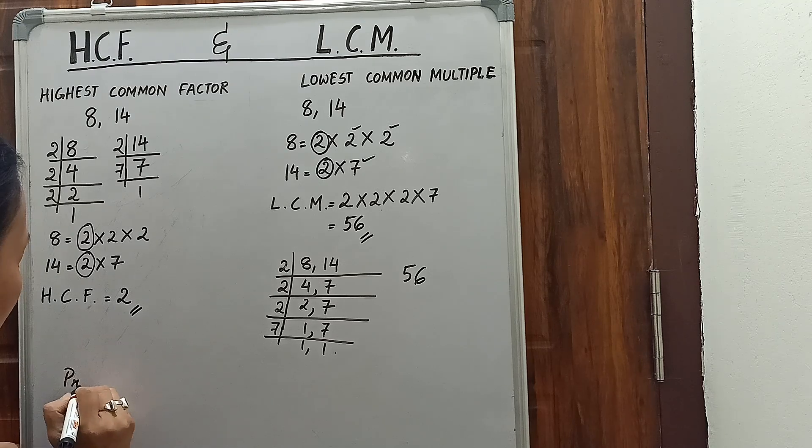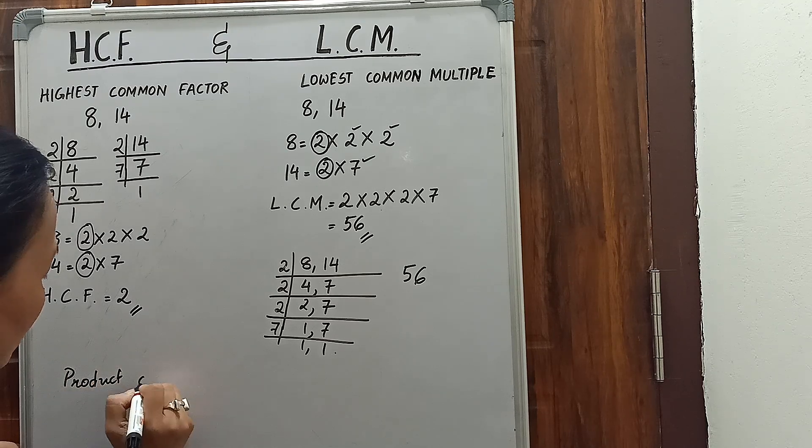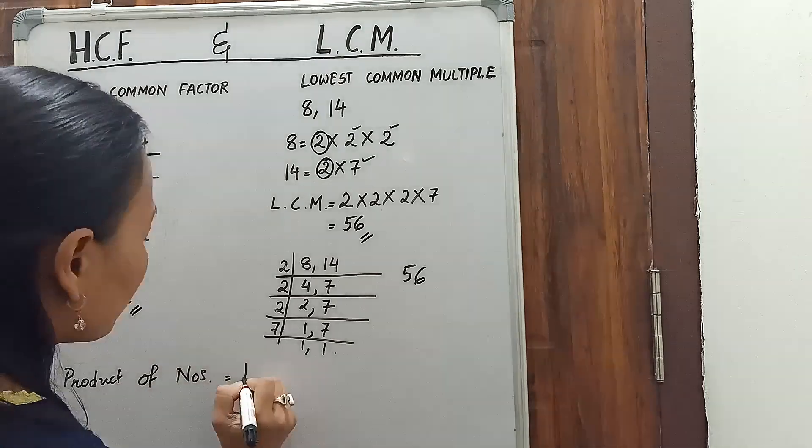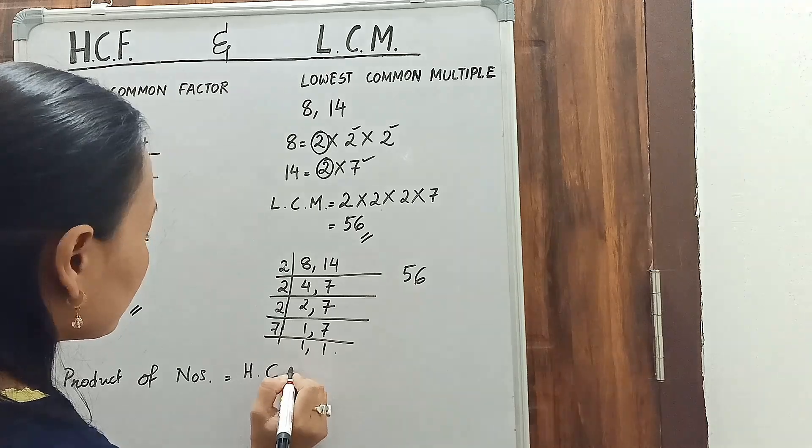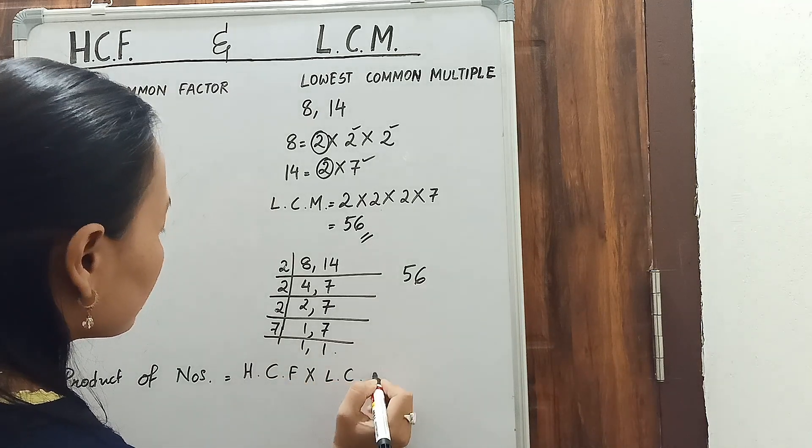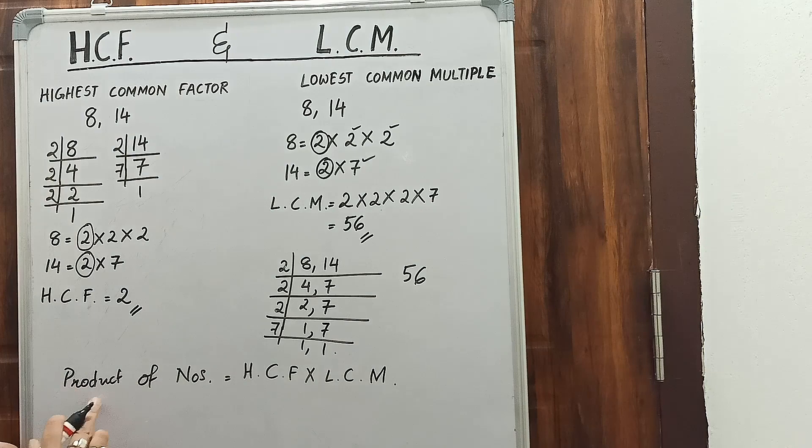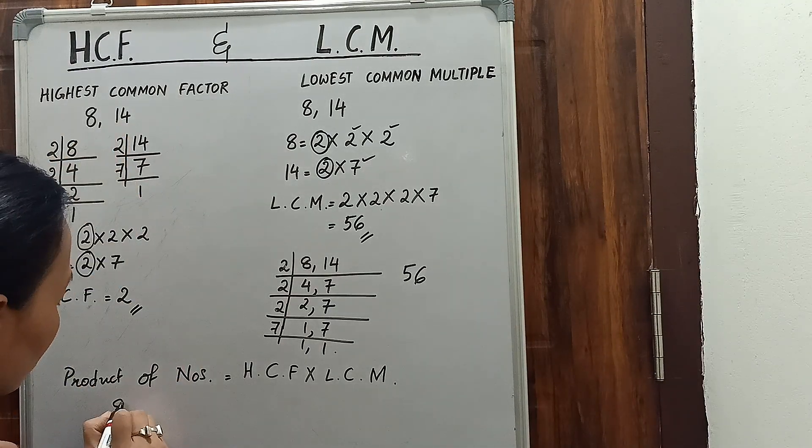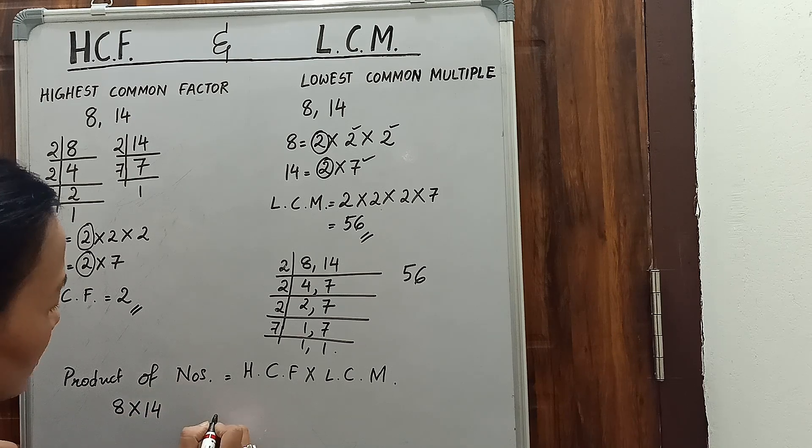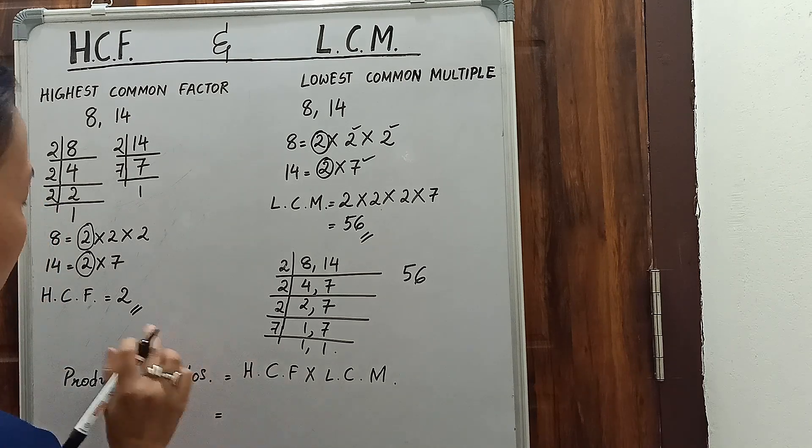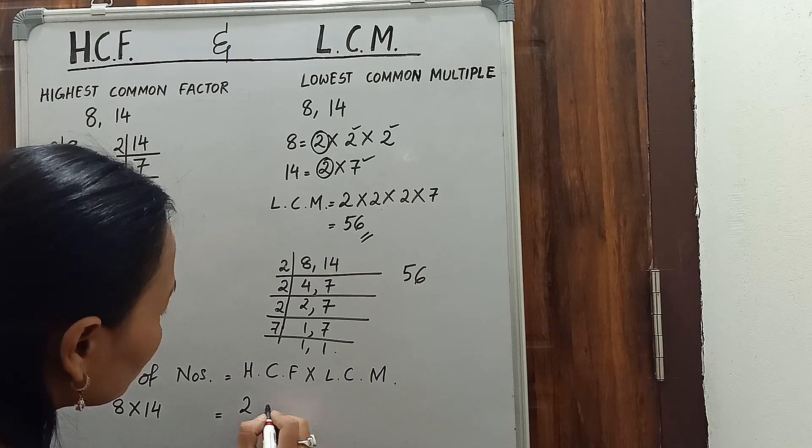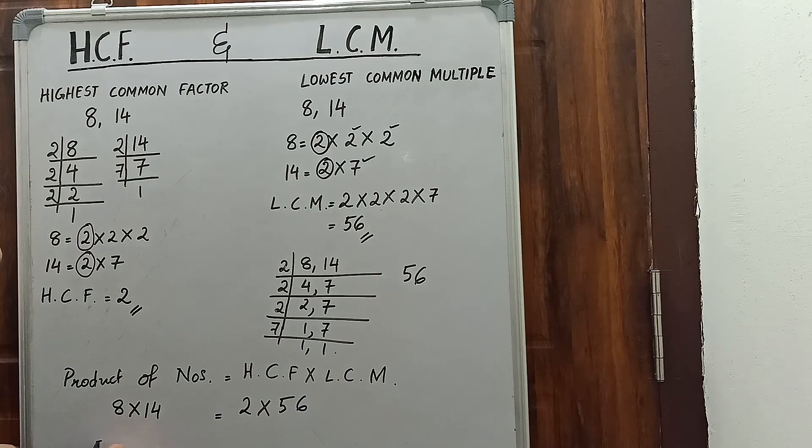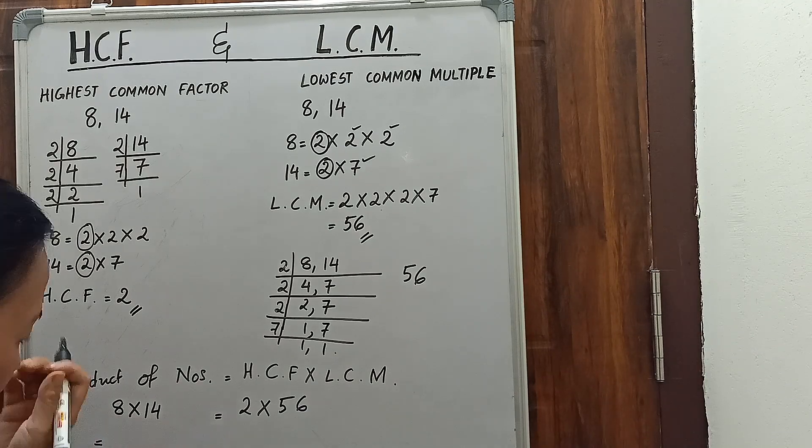Again, we have one formula here: product of numbers equals to HCF into LCM. So what are the numbers? Product of numbers we have taken here 8 and 14, so we'll find out the product of 8 and 14. 8 into 14 equals to HCF is 2 and the LCM is 56.